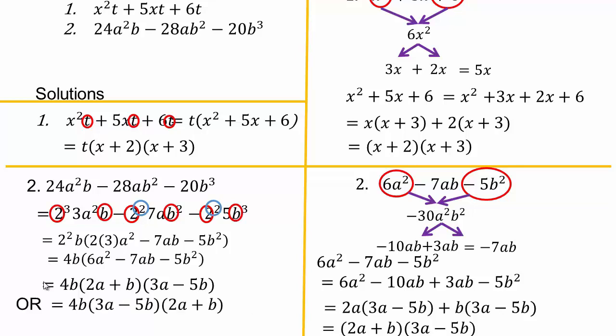Does it matter whether you write 4b times 2a plus b times 3a minus 5b, or 4b times 3a minus 5b times 2a plus b? No — it doesn't matter because multiplication is commutative. Remember the why behind these properties.